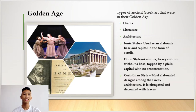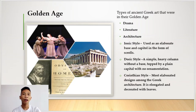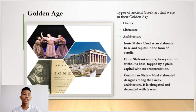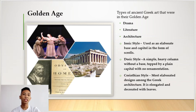The first one is drama, the second one is literature, and the third one is architecture. For drama, these are the plays that the ancient Greeks were conducting. Most of these dramas are about the tragedies that happened in Greek civilization.